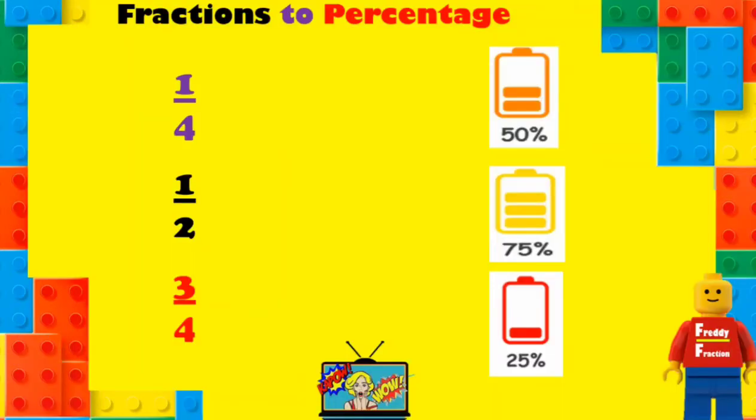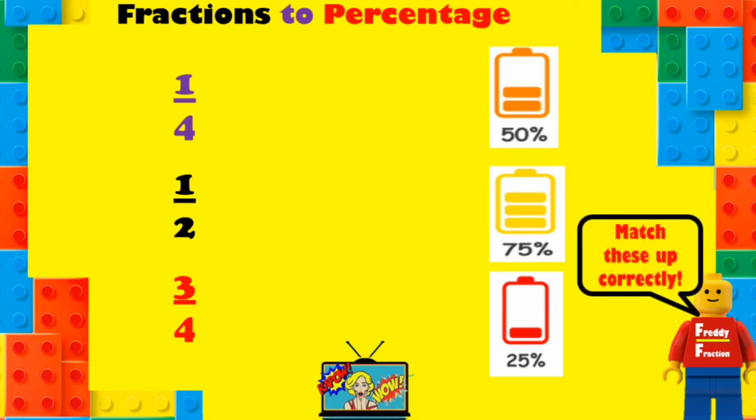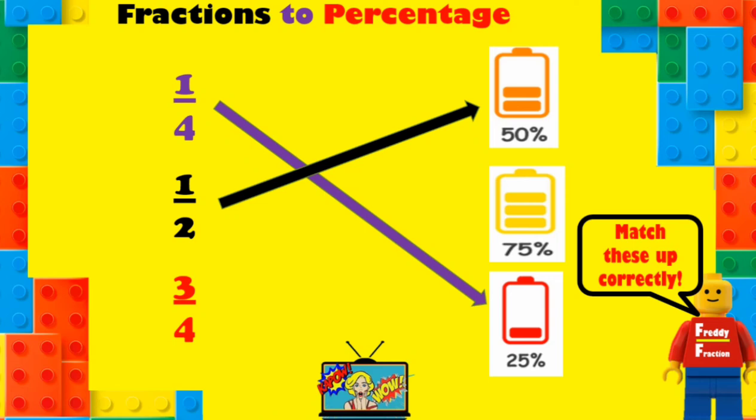Now, can you match the correct fractions to the correct percentage? We have 1 quarter, 1 half, and 3 quarters. We have 50 percent, 75 percent, and 25 percent! You can pause and then answer! To match these correctly: 1 quarter is 25 percent! 1 half is 50 percent — that's Freddy Fraction awesome! And therefore 3 quarters is equal to 75 percent! That's totally awesome!